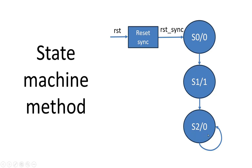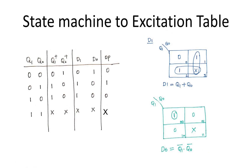Now I will explain how to convert the state machine into a digital design. I will not focus much on the reset synchronizer here — if you want more details about reset synchronizers, I have prepared other videos and will paste their links in the description section. The first step to implement this state machine as a digital design is to convert it into an excitation table.